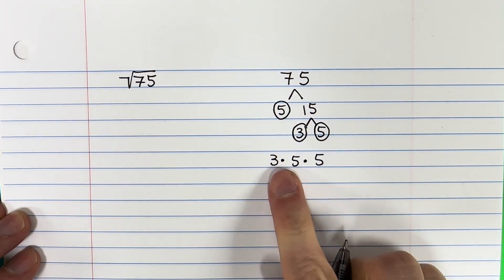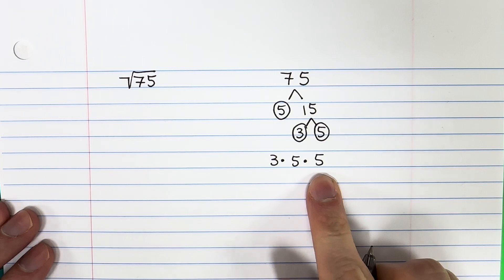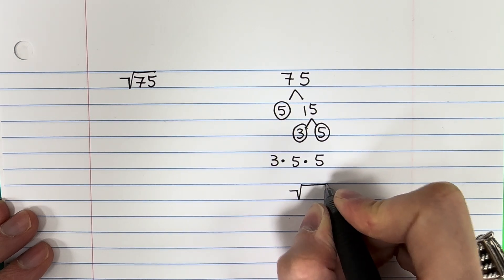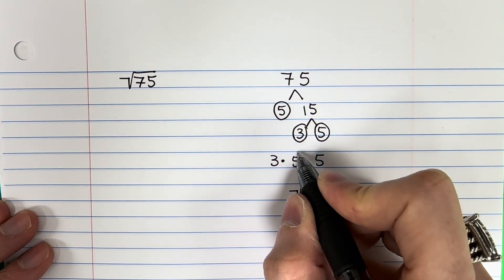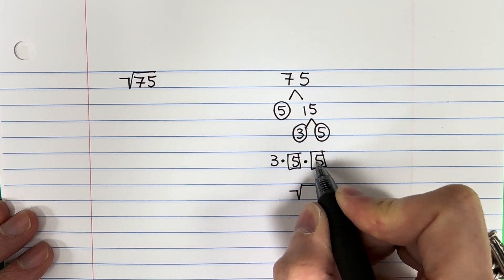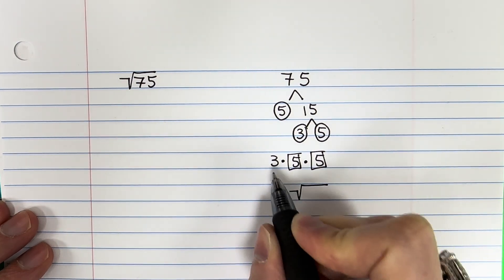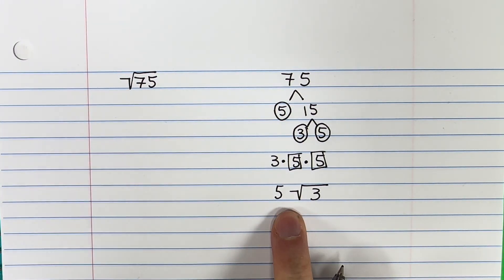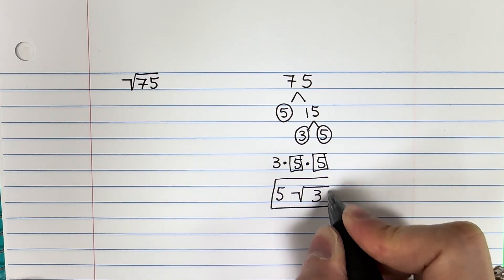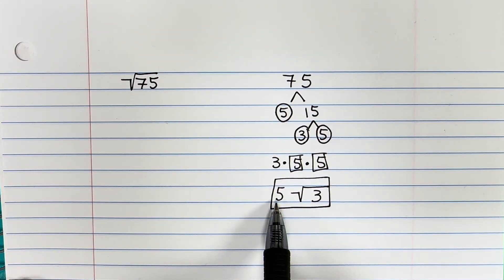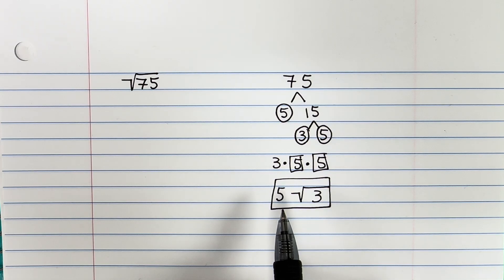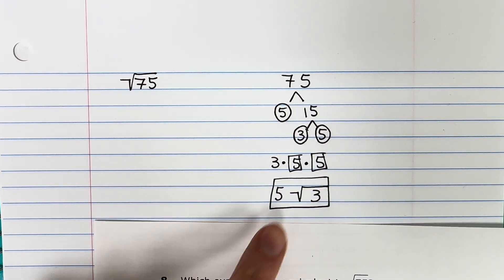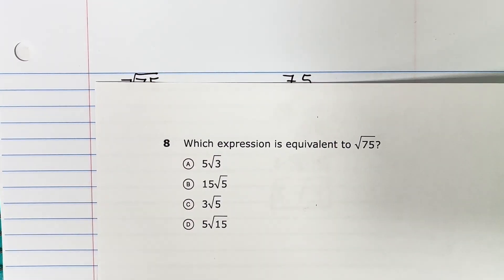I'll put them in order from smallest to greatest. Now I'm going to take out the pair. I have two 5s — if you have 2 of a number, you can put it outside the square root. The 3 is alone, so it goes inside. So my answer is 5 times the square root of 3. This expression is equivalent to the original, so 5 square root of 3 — my answer is A.